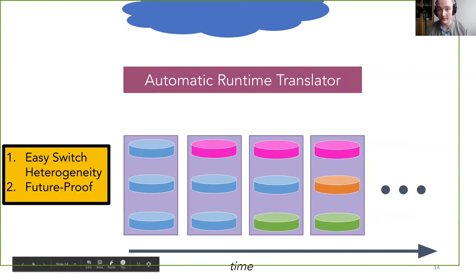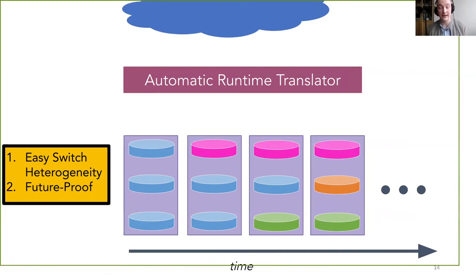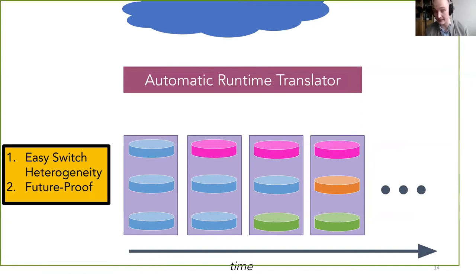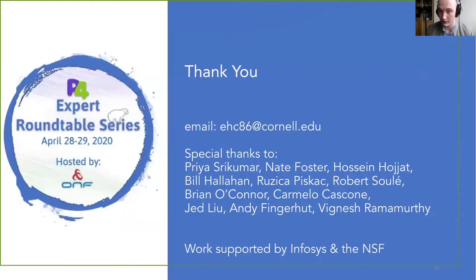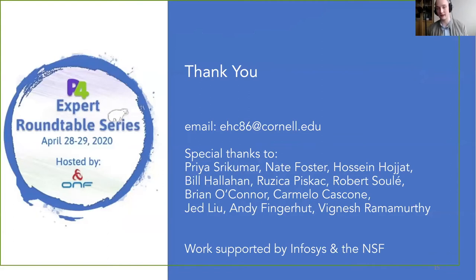To summarize: Avenir is an automatic runtime translator that sits between the controller and the data plane, exposing an abstract switch to the controller and translating runtime operations into physical data plane operations for our physical switches. It supports switch heterogeneity easily because it's automatic, and future-proofs our data plane to prevent the need for forklift upgrades. You can freely upgrade, modify, and support multiple architectures in your network with verified confidence that your translation is correct. Thank you. I want to thank collaborators, most notably Priya Shrikumar, an undergrad who has done some awesome work, and my advisor Nate Foster.